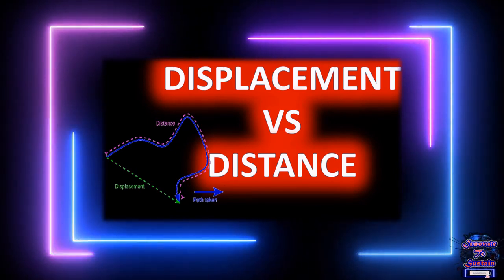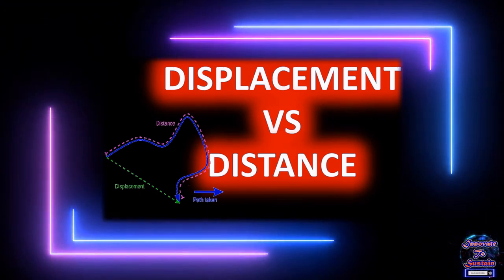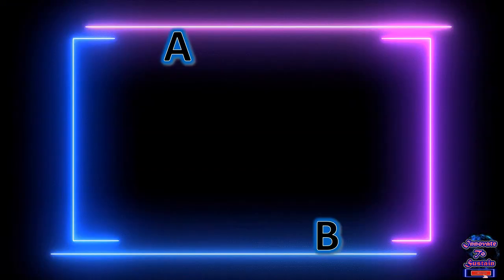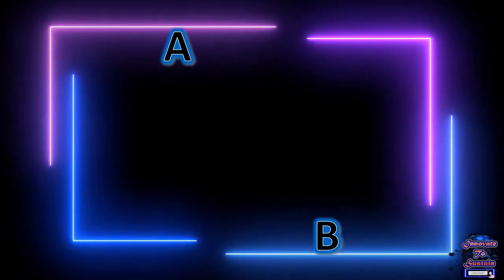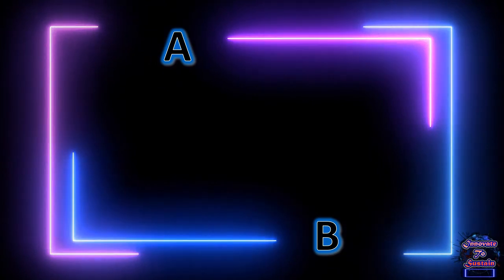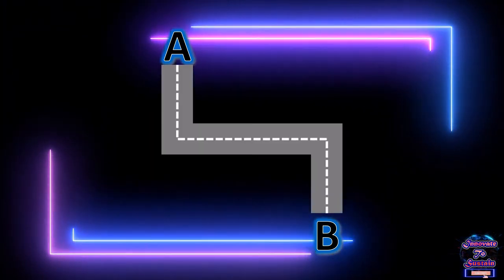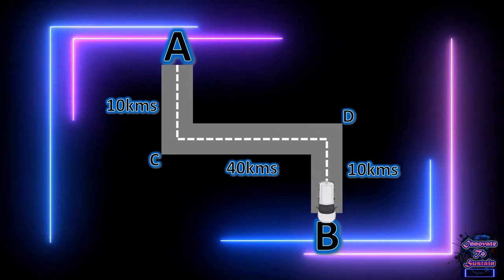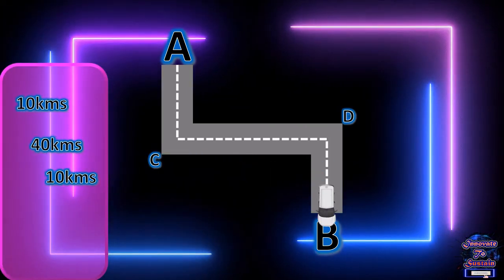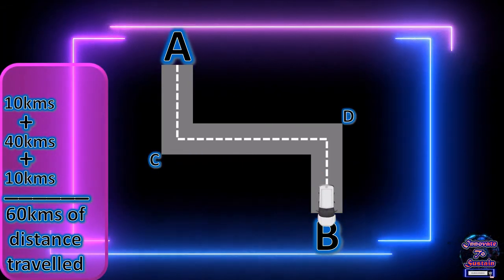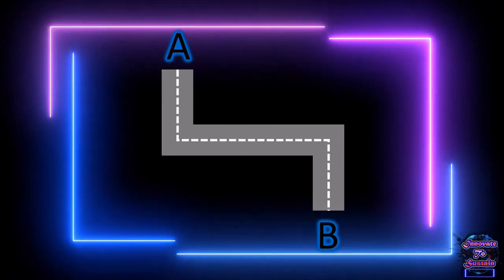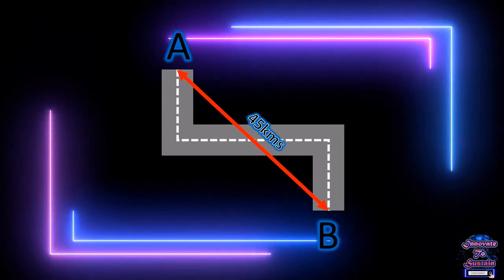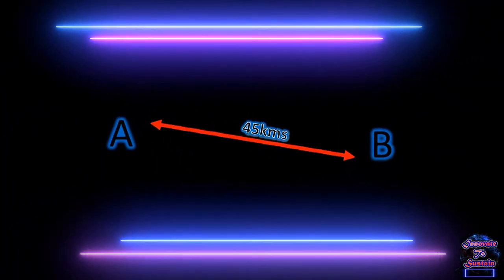In one of our previous videos we understood the differences between distance and displacement. Let's recall it with an example. While traveling from village A to B, the road has two bends at C and D. The car has traveled 10 plus 40 plus 10, that is 60 kilometers of distance, but the actual shortest straight-line displacement between A and B is 45 kilometers.